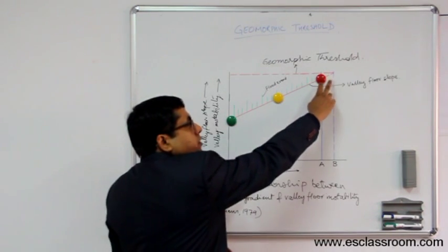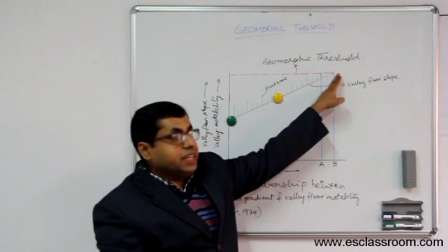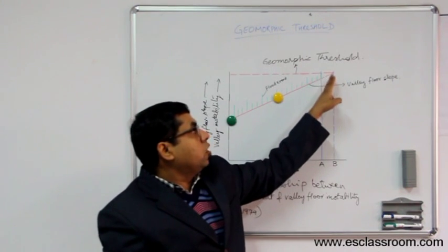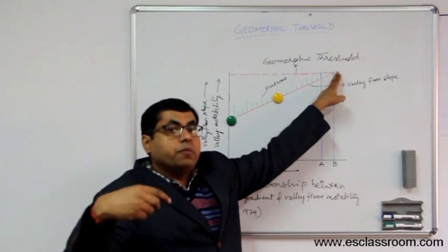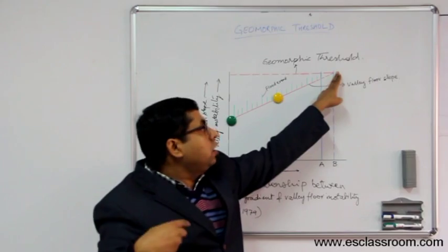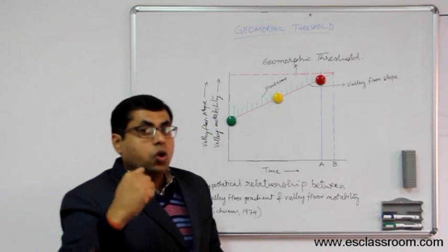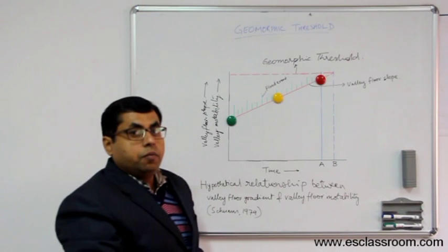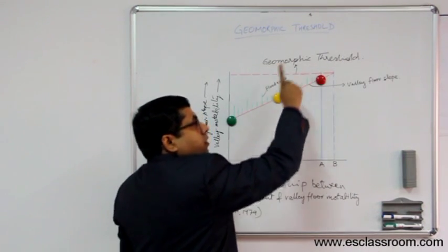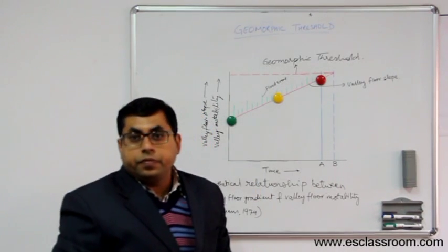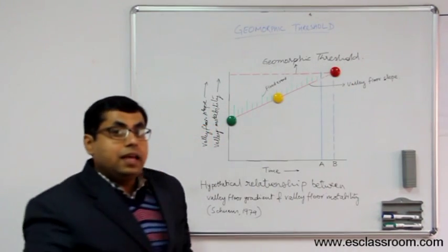Now, here you can notice that there are two issues. Either the valley becomes steep on its own as it is increasing, the slope or the valley gradient is increasing. It may reach to that threshold and there will be changes or it will become unstable and the changes will happen in the valley. Or else, it is very close to the threshold. On its own, it has not crossed that threshold. But instead, what has happened is there is a big flood event that is pushing the valley to cross this threshold. Now, this is extrinsic threshold. But when it crosses on its own, it is intrinsic threshold.